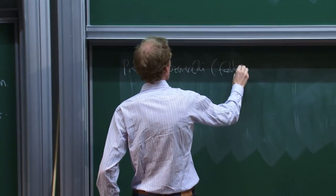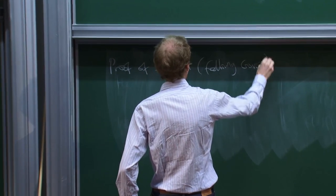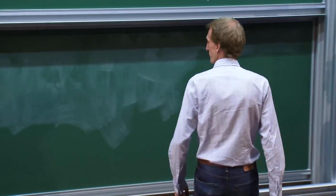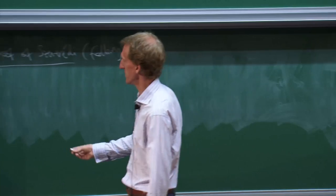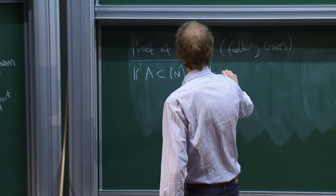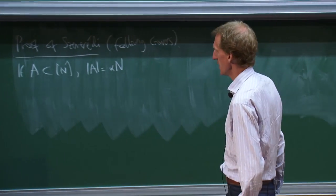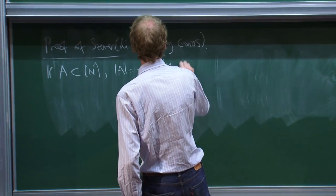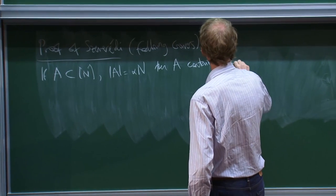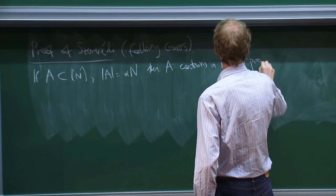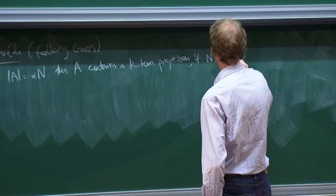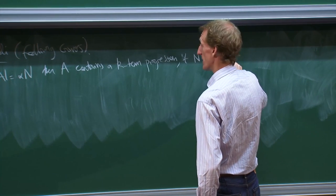So this is following Gowers. I stated Szemerédi's theorem in the first lecture — let me just remind you. Szemerédi states that if A is a subset of 1 up to N of size alpha times N, then A contains a k-term arithmetic progression, provided N is large enough — N_0(k, alpha).